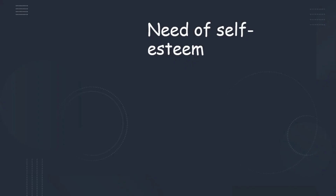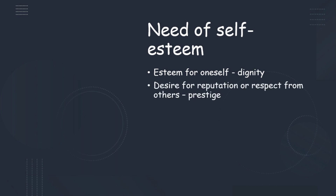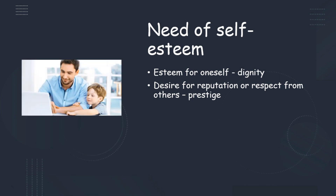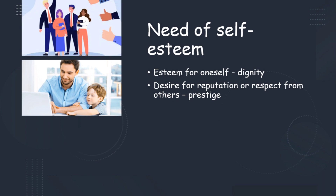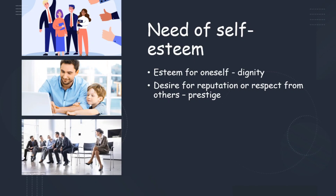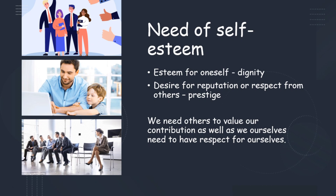Next comes the need of self-esteem. Maslow classified esteem needs into two categories: esteem for oneself — that is dignity — and the desire for reputation or respect from others — that is prestige. After we have secured our physiological and emotional needs, we need self-worth, accomplishment, and respect. If we are doing a job, have friends and family, but are not recognized or respected by anyone, there will be no satisfaction. Human beings always have a desire to be accepted and valued by others. We need others to value our contribution, and we ourselves need to have respect for ourselves — that is dignity. Without that, we won't be able to be more productive in our work.